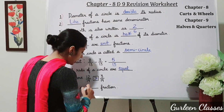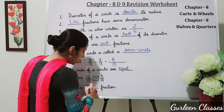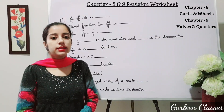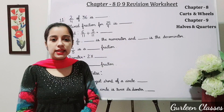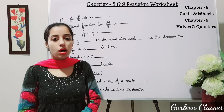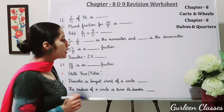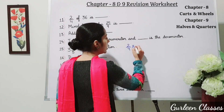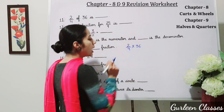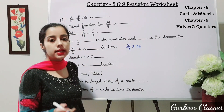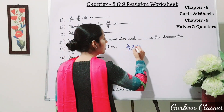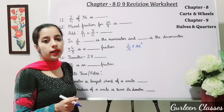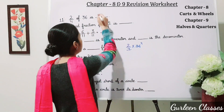Next: 2 upon 4 of 36 is — students, 'of' means multiply. To solve 2/4 of 36, we divide 36 by 4, which gives 9. Then multiply by the numerator 2: 2 into 9 equals 18. So the answer is 18.